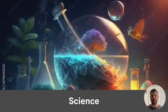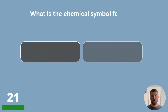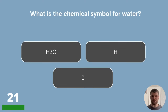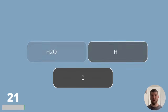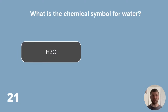Next we have the category of science — ten questions all about science. Question 21: What is the chemical symbol for water? Is it H2O, H or O? H is hydrogen, O is oxygen, and H2O is water.